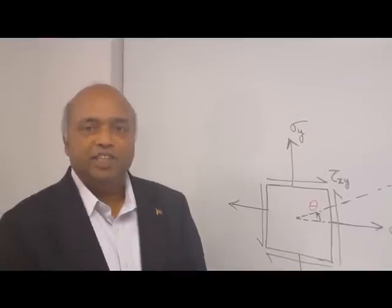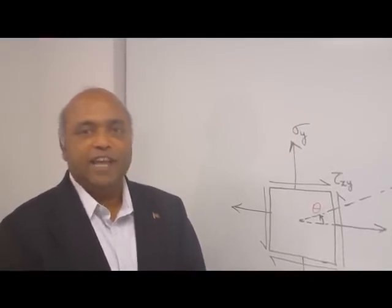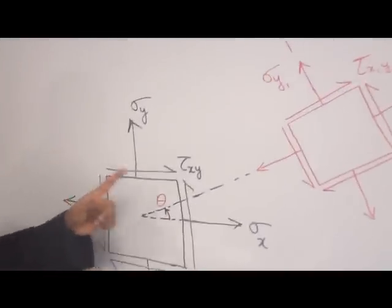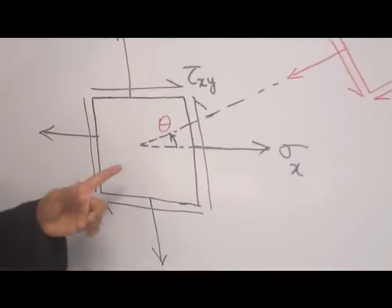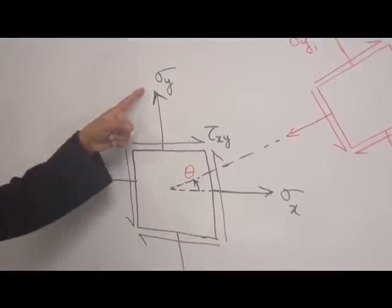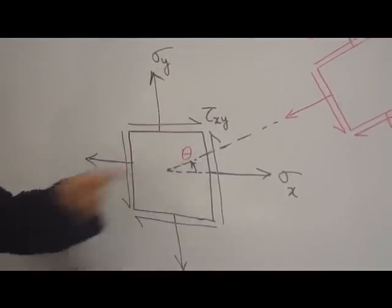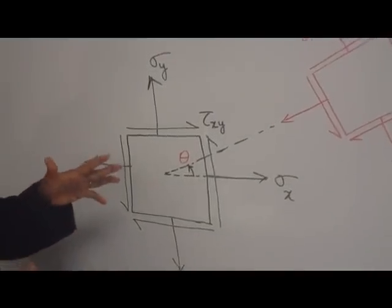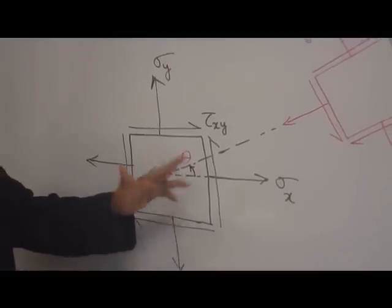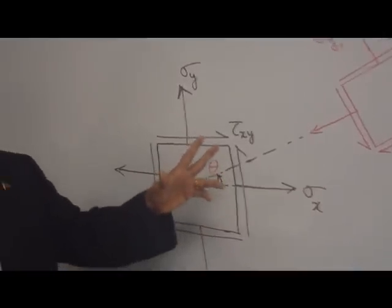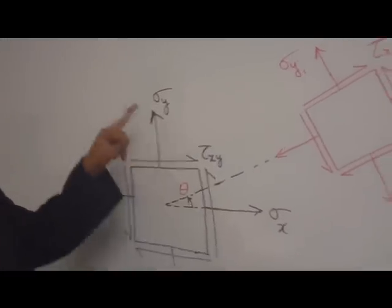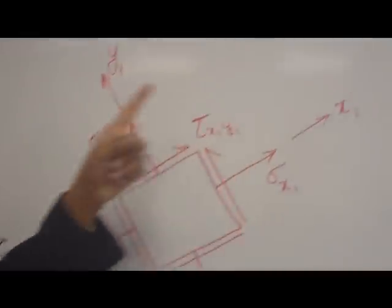Mohr's circle was discovered by the German engineer Otto Mohr — that's why the name Mohr's circle. Looking at this diagram, this is a plane stress state. We have normal stress in the x direction, sigma x, and sigma y in the y direction, along with the shear stress. If the element is rotated through an angle theta, what will be the stresses in the new axis? This is the transformation of stresses from the x-y system to the x1-y1 system, where x1-y1 is rotated through angle theta.